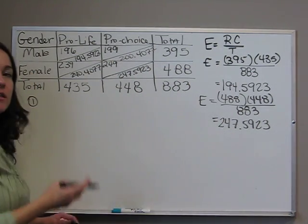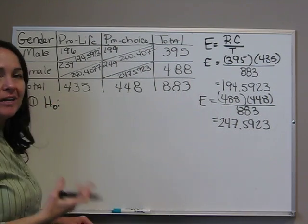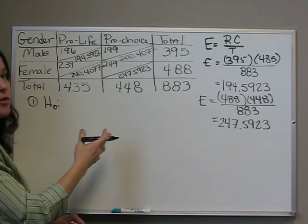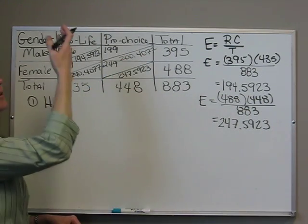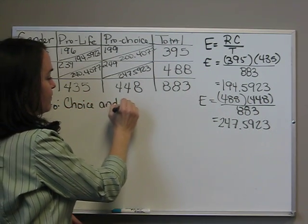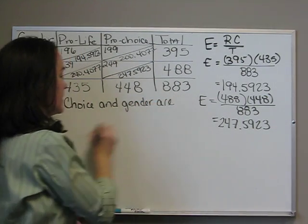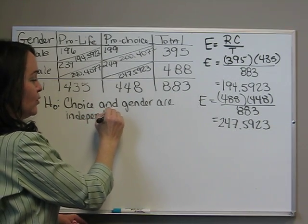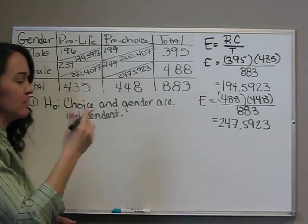First step is to state the null and the alternative. The null is always that the two are independent, or that there's no association between the two variables. So our two variables here are choice and gender. Choice and gender are independent, or that there's no association between choice and gender.